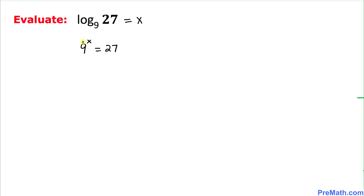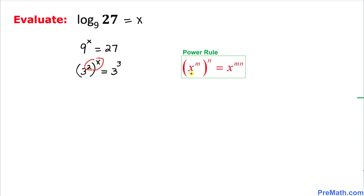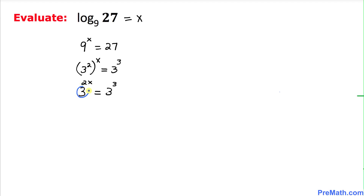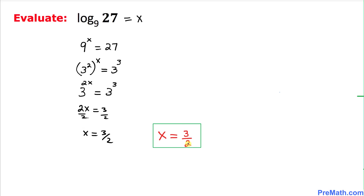On the left-hand side, 9 can be written as 3 power 2, so we have 3 power 2 then power x. On the right-hand side, 27 can be written as 3 power 3. Using the power rule for repeated exponents, we get 3 power 2x equal to 3 power 3. Since the bases are the same, we equate the exponents: 2x = 3. Dividing both sides by 2, x equals 3 over 2.